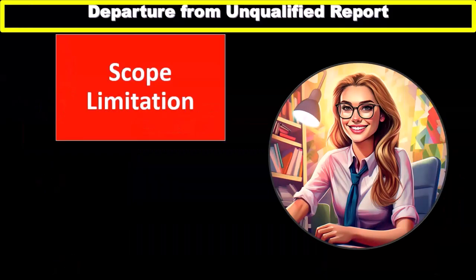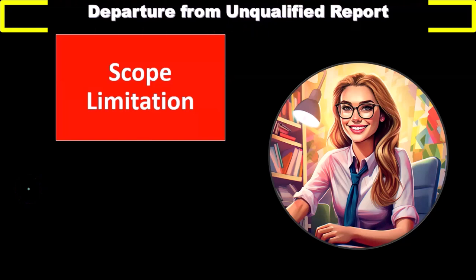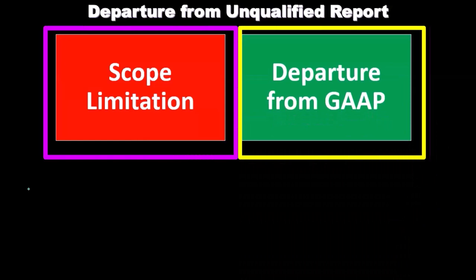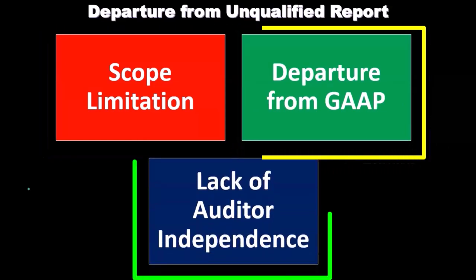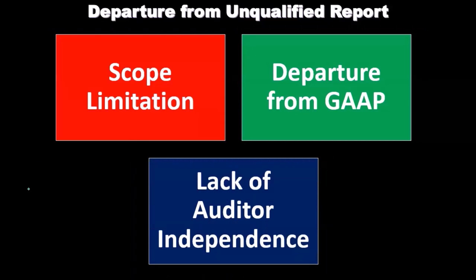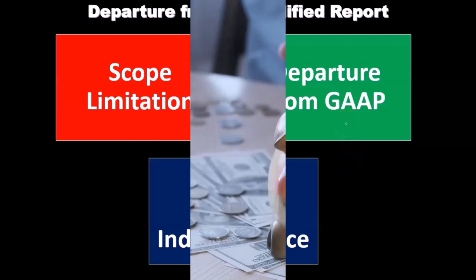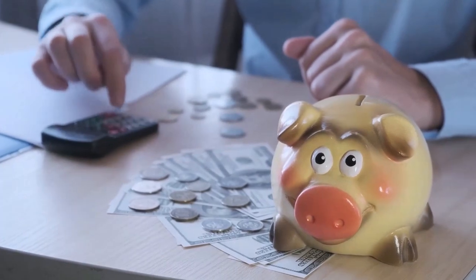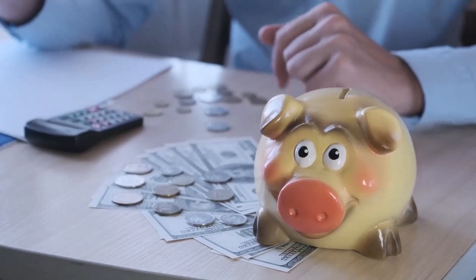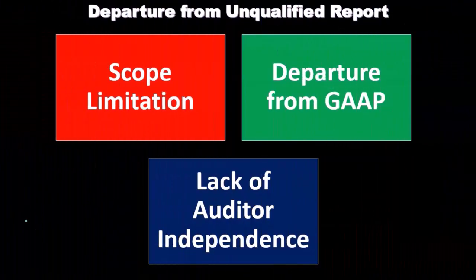So when might these departures happen? We could have a departure from the standard unqualified report — and we're going to list these out and go into more detail later — but the departures include: if there's a scope limitation, if there's a departure from GAAP (generally accepted accounting principles), and if there's a lack of auditor independence. These could be issues that would require us to deviate from the unqualified opinion, assuming the financial statements have been put together in accordance with generally accepted accounting principles. If there's a significant deviation from it, that would be an issue because that's what our opinion is based on.